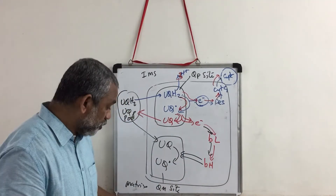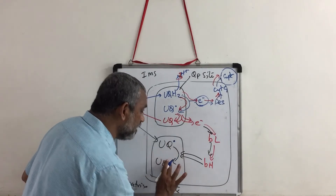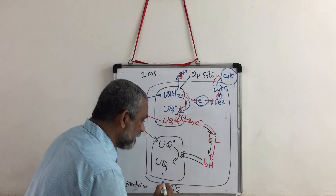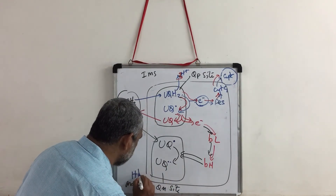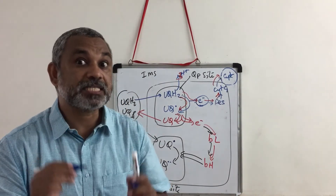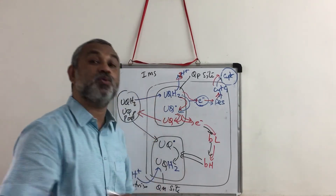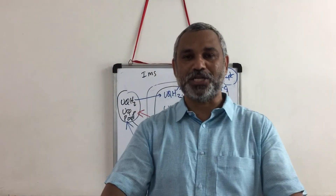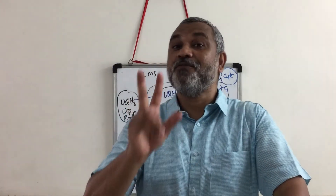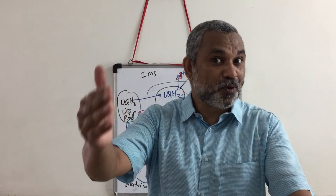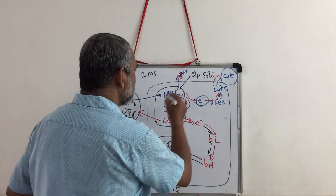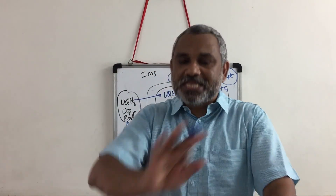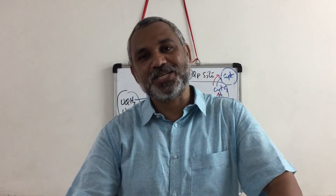The semi-quinone form in the QN site accepts this second electron and, together with 2H+ taken up from the matrix side, becomes fully reduced UQH2. We have taken two UQH2 molecules and sent one back into the UQH2 pool. In the process, 4H+ are transported across the membrane, making this an unbalanced electron transport system. This is what is known as the Q cycle.